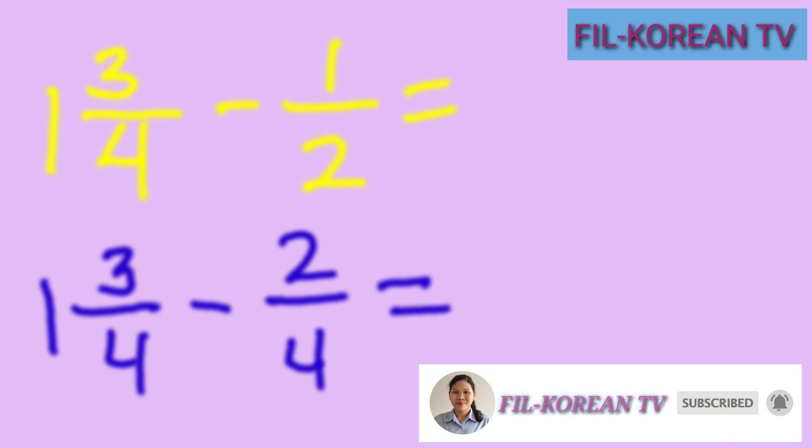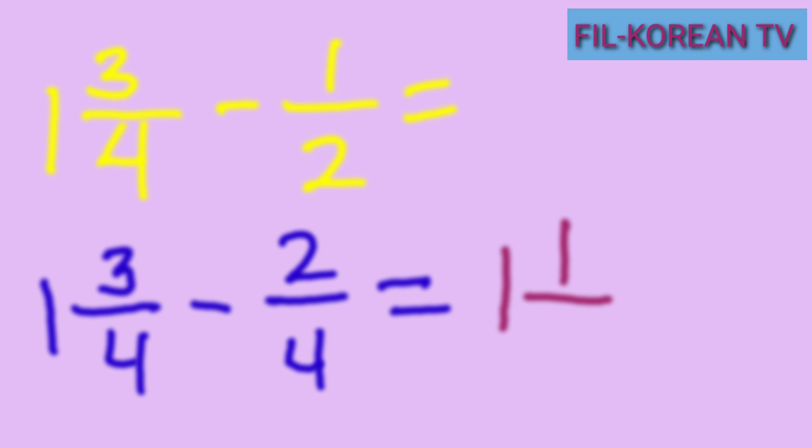Subtract the numerators. 3 minus 2 equals 1. Write the whole number 1, and then copy the LCD 4. The answer is 1 and 1 fourth.